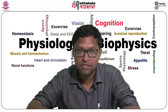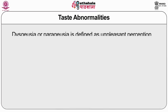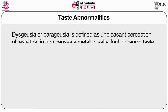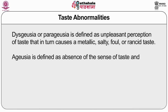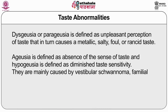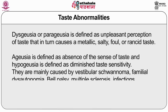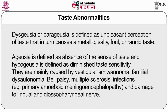There are various types of taste abnormalities. Dysgeusia or parageusia is defined as an unpleasant perception of taste causing a metallic, salty, foul, or rancid taste. Ageusia is defined as the absence of sense of taste, and hypogeusia as diminished taste sensitivity. These are mainly caused by vestibular schwannoma, familial dysautonomia, Bell's palsy, multiple sclerosis, infections such as primary amebic meningoencephalitis, or damage to the lingual and glossopharyngeal nerves.